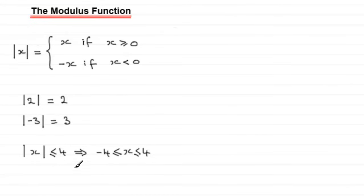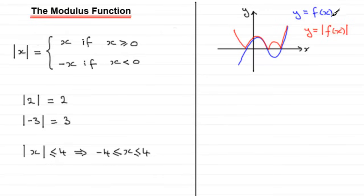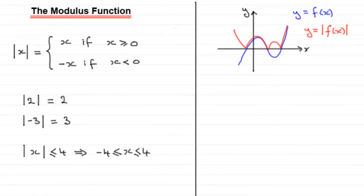There's more to the modulus function. In my revision guide, I'll show you what else we can do. We can look at graphs: if we have y equals f of x, illustrated by the blue curve, I'll show you how to sketch y equals the mod of f of x, given by the red curve. Any negative values of y — the parts of the graph below the x-axis — get reflected in the x-axis, giving you the overall graph of y equals the mod of f of x.